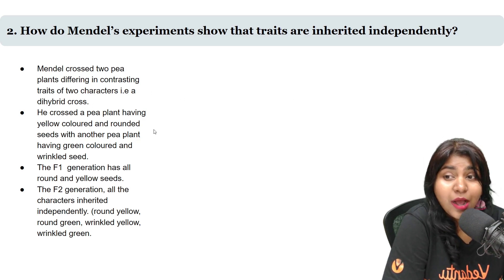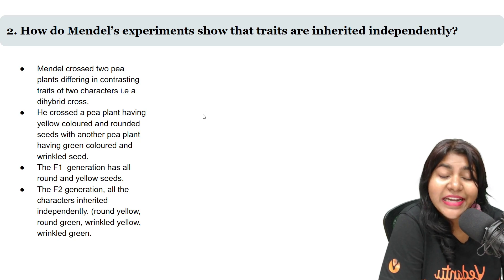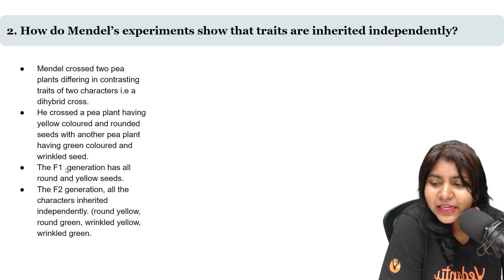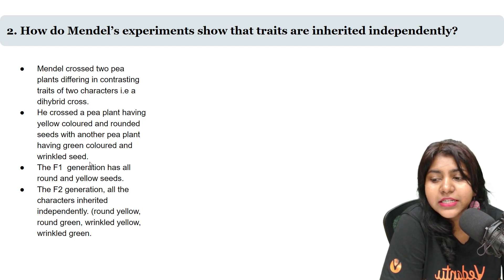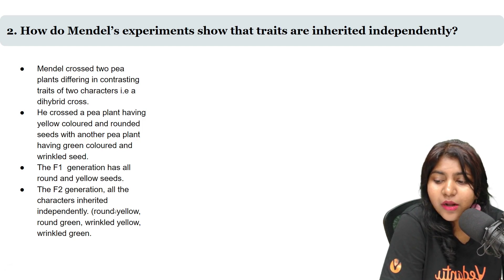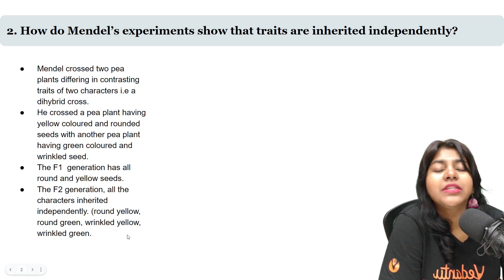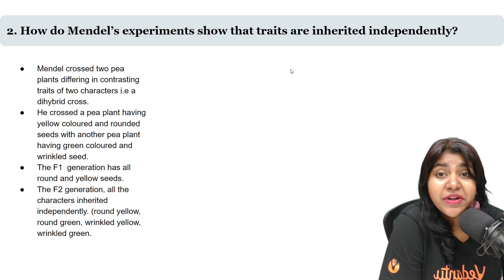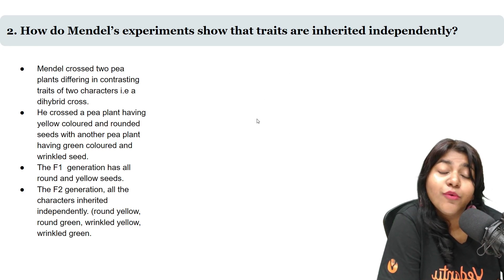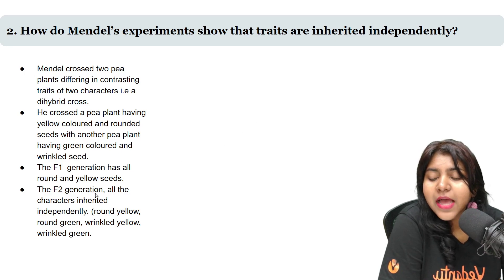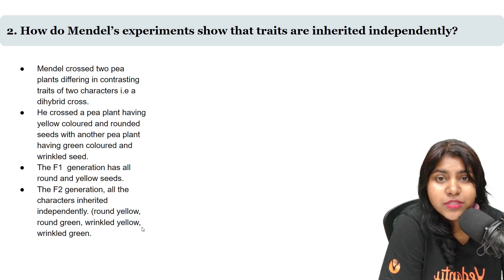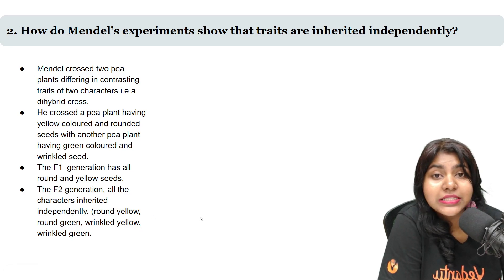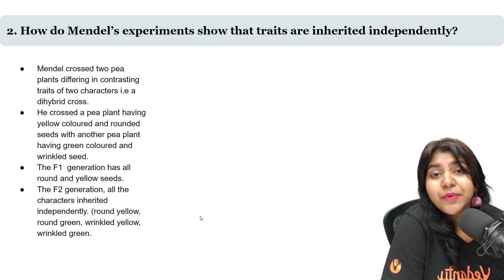So this is how Mendel's experiment shows traits are inherited independently. He crossed the pea plant having yellow colored and round seeds with another pea plant having green colored and wrinkled seeds. So in F1 generation, all of them have yellow round seeds, and in F2 they have a 9:3:3:1 ratio. This is what concluded that all traits are independently inherited — meaning one trait does not influence another. For example, if you have a green color trait, it does not influence the shape trait. The two traits, green and yellow, are not mixed into a red color seed. So the traits are independently inherited.